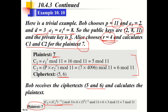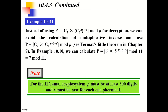To decrypt in ElGamal, we use the expression involving C1^D, taking its inverse using Fermat's Little Theorem: the inverse of C1^D is C1^(P−1−D) mod P. With P = 11 and D = 3, the inverse of 5^3 = C1^(11−1−3) mod 11. Remember this formula for the ElGamal decryption.